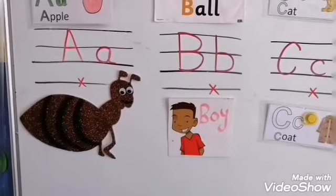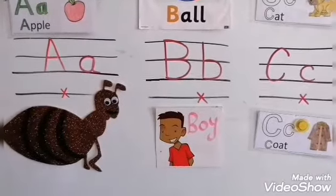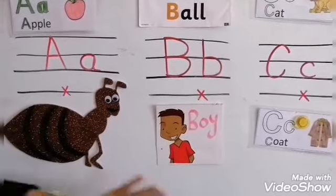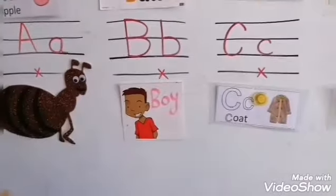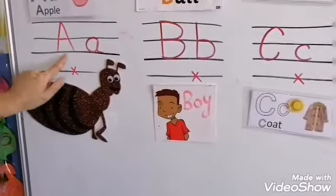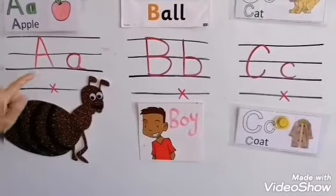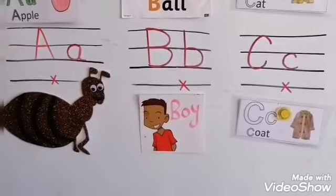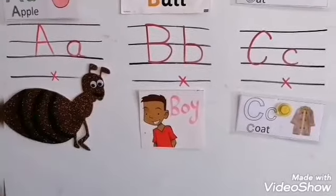Now, my kids, open your eyes, look to the board. One, two, three. Capital A, small a. A, a — apple, aunt.